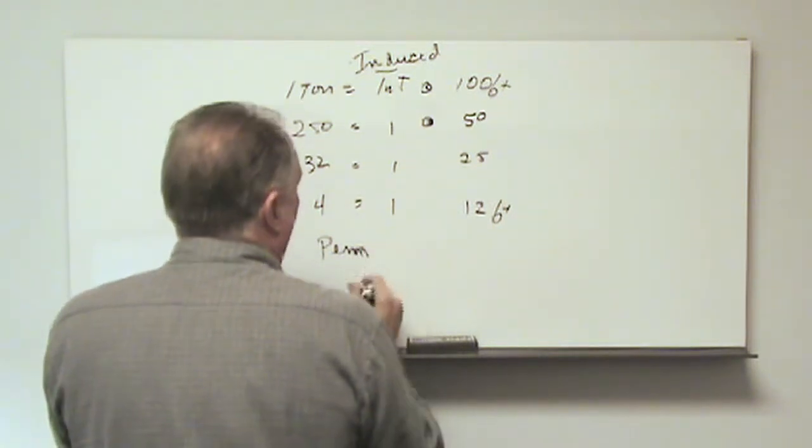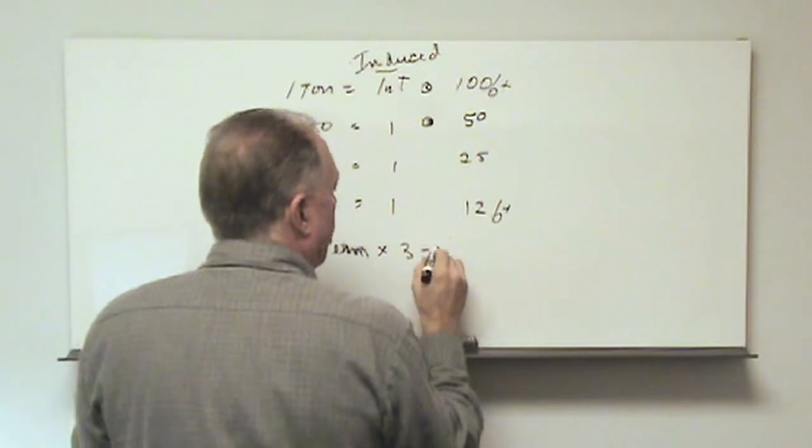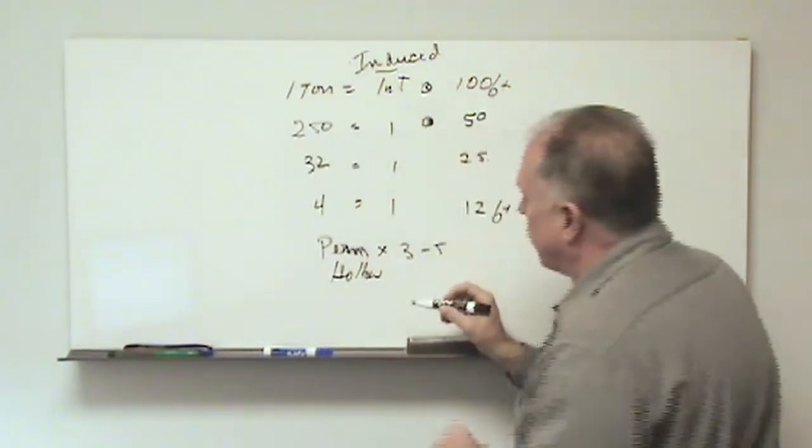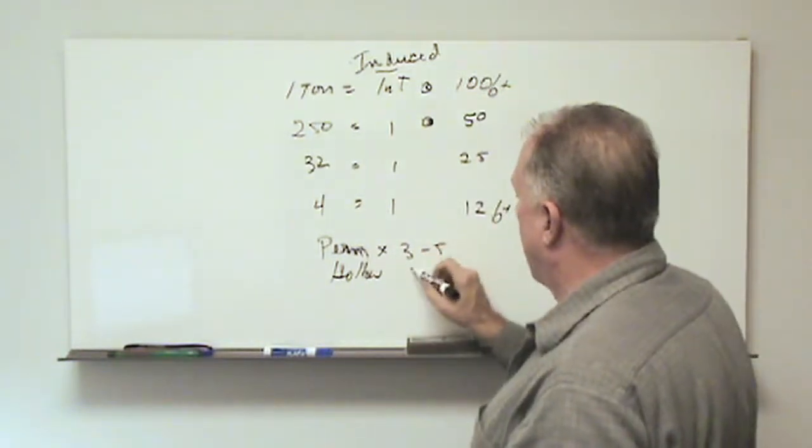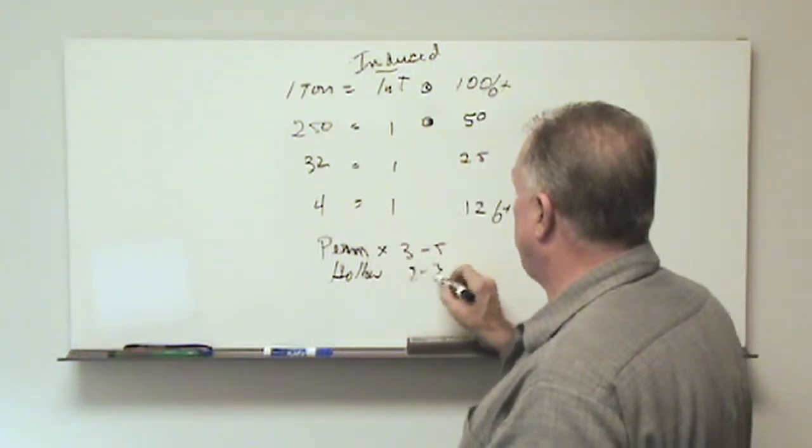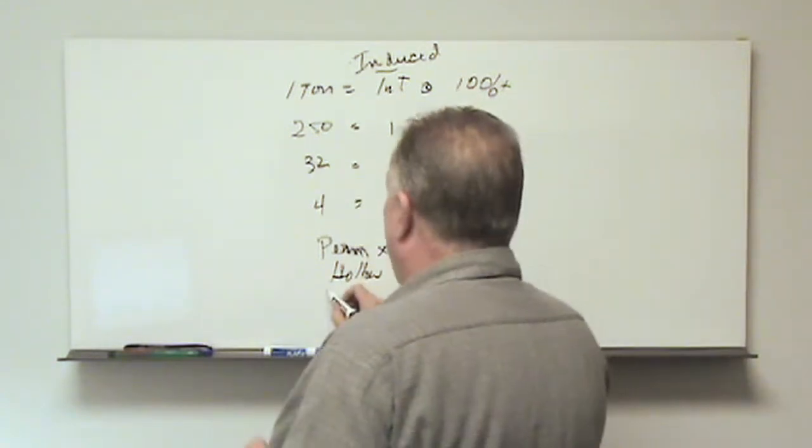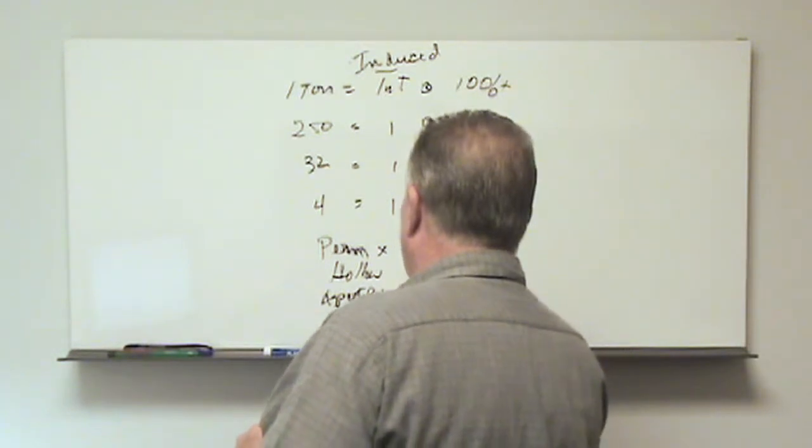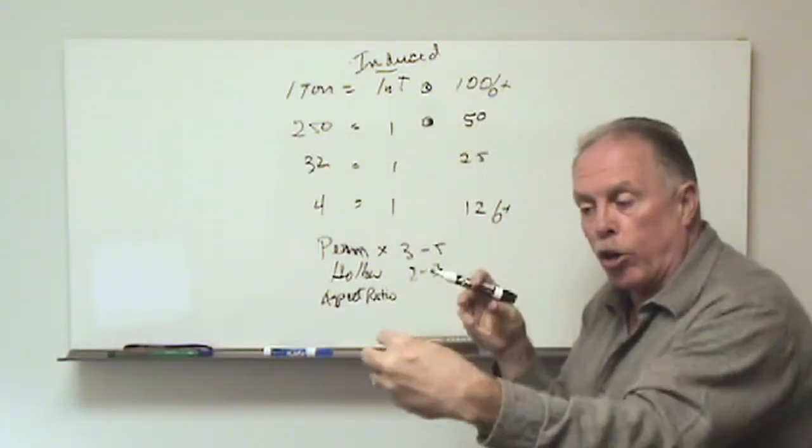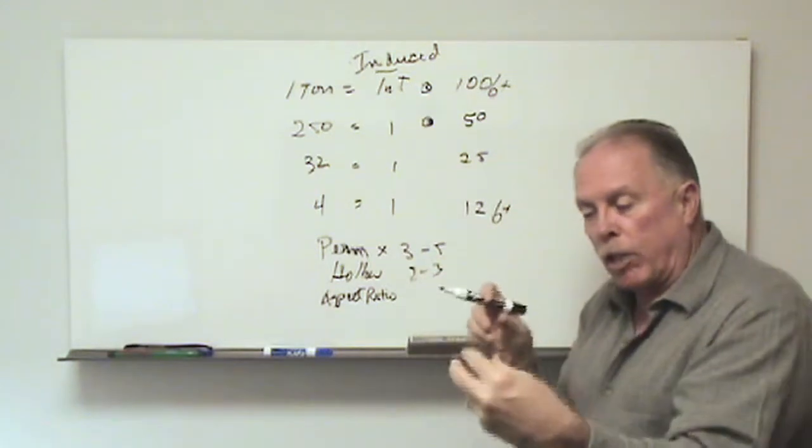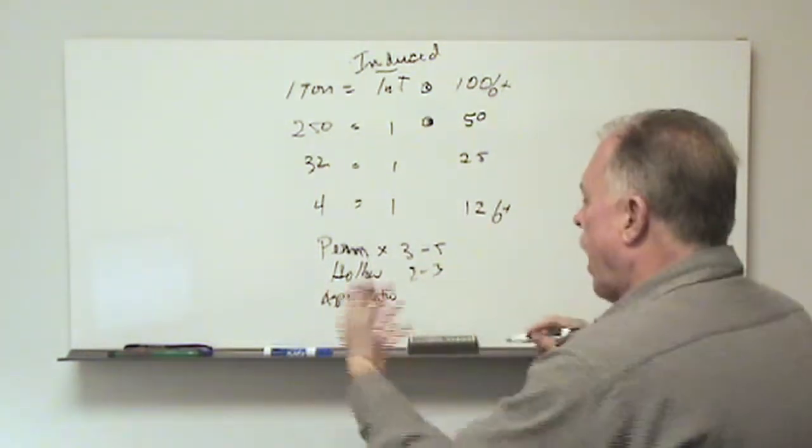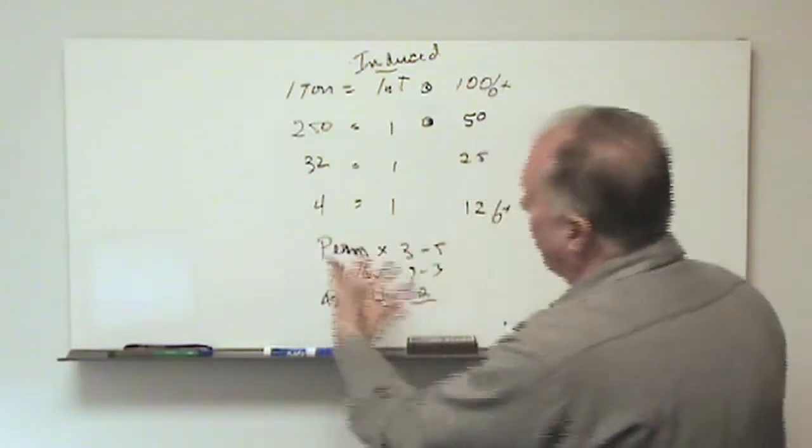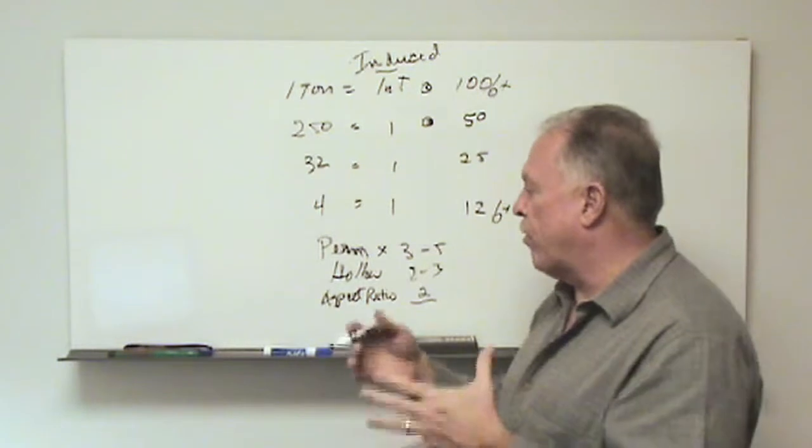The perm can add perhaps three to five. We have hollow. Again, the hollowness of the object can add three, two to three. And then we have aspect ratio. Aspect ratio. And the aspect ratio again means that the object is longer than its diameter. It looks like something that would fly through the air or the water, for instance. And that can also increase at a factor of two. So when we actually design the survey to find a given object, we can take a couple of different approaches on this.